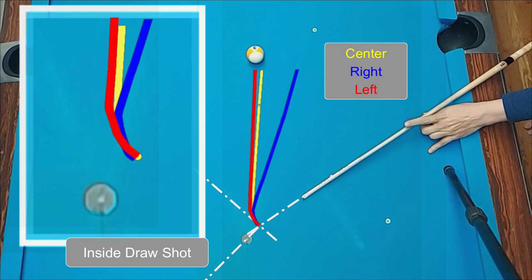For this reason, the shot struck with left English had no chance of drawing back at a sharper angle. But before we come to a conclusion, let's repeat this experiment again, and I'm going to strike each shot hard enough to draw the cue ball all the way to the head rail of the table.